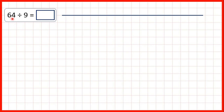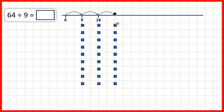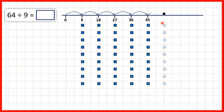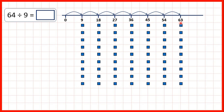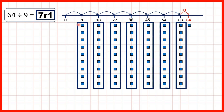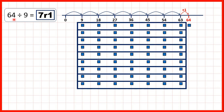Our last question was 64 divided by 9. We can count up 9, 18, 27, 36, 45, 54, 63. Going to 72 would be too many, but from 63 we just need to add 1 to get to 64. Our answer is 7 remainder 1, because if we make groups of 9 we can make 7 groups and have 1 counter left over. Or if we're splitting 64 into 9 groups, we can have 7 in each group but there's 1 that we can't put into a group — so that's why we have 7 remainder 1.